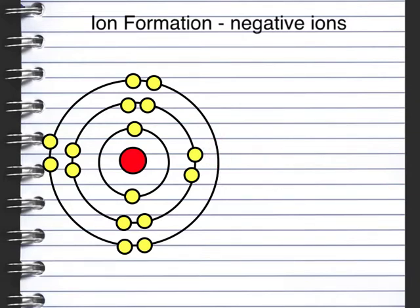Here we've got an element in group 6 because we've got 6 electrons in the outer shell. We've got space for 2 electrons, so we can gain 2 electrons. Because we've gained 2 negative charges, we will have a charge of minus 2. This is the charge of elements in group 6.